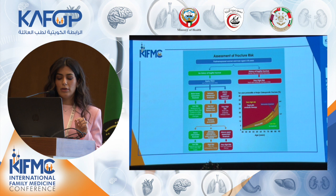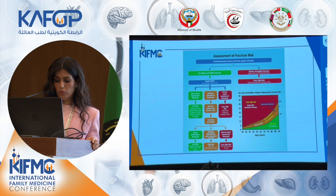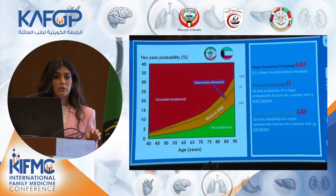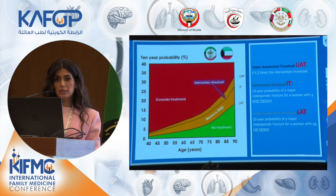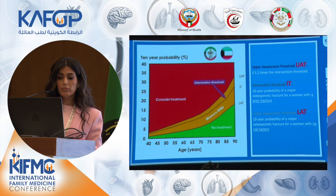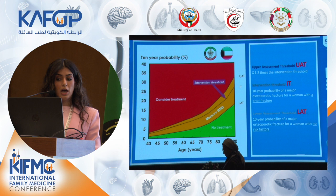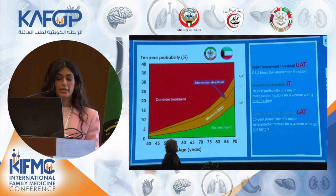If the patient does not have a history of fragility fracture, apply the FRAX. I would like to explain the thresholds in the slide. These are thresholds calibrated to Kuwait's population to guide diagnosis and management. The lower assessment threshold is the 10-year probability of a major osteoporotic fracture for a woman with no risk factors. If the patient's FRAX is below that threshold, they are on the safe side. The intervention threshold is defined as the probability for a woman with a prior fracture, plus the upper assessment threshold, which adds 20 percent to the interventional threshold. Any patient above the upper assessment threshold is a candidate for treatment.